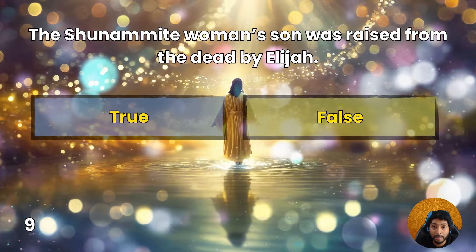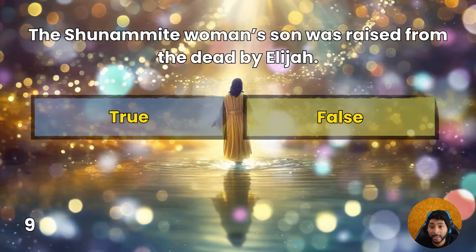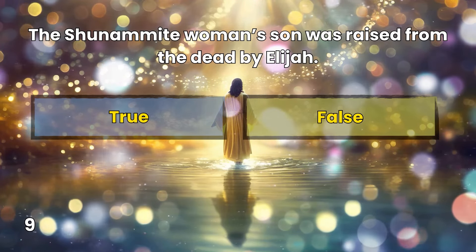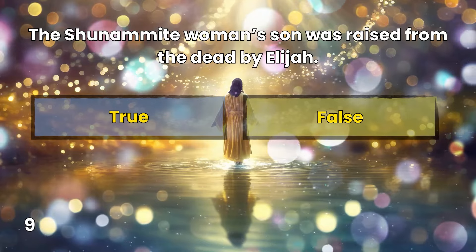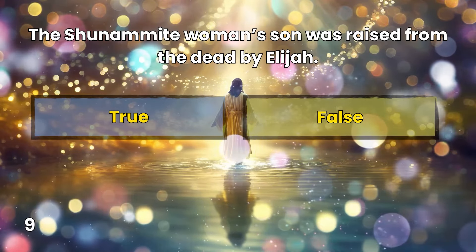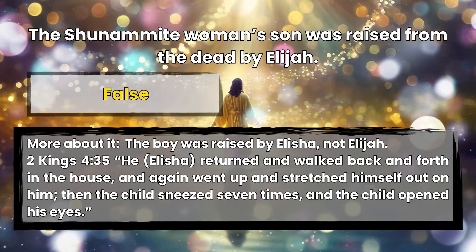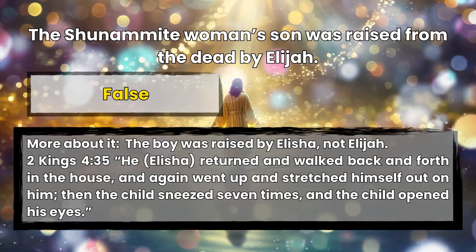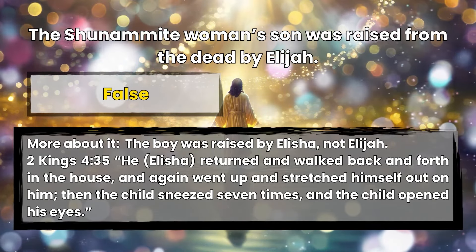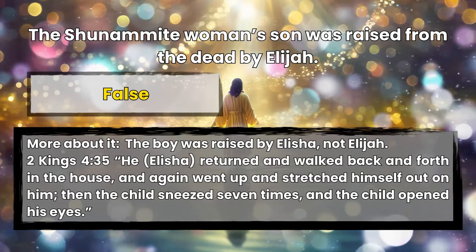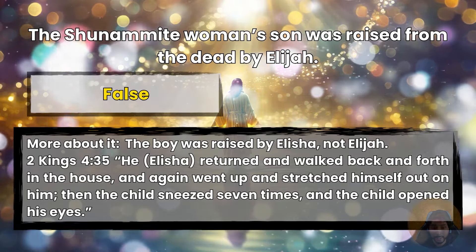Question 9: The Shunammite woman's son was raised from the dead by Elijah. False. 2 Kings 4:35 — He, Elisha, returned and walked back and forth in the house and again went up and stretched himself out on him. Then the child sneezed seven times and the child opened his eyes.